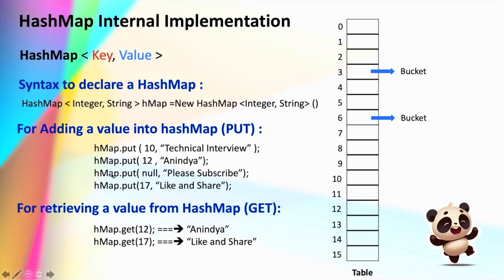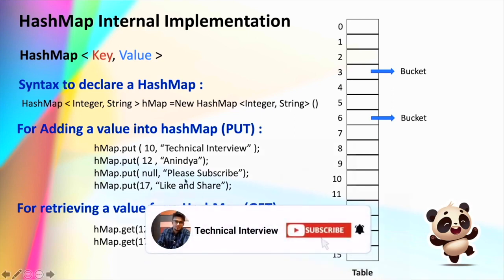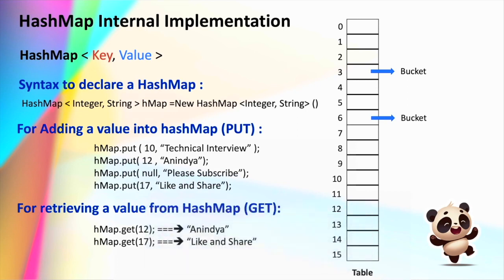One important fact about HashMap is that it allows inserting a single null value as a key, whereas a TreeMap — another important data structure — does not allow a null value as its key. This is how we insert a key-value pair within our HashMap, and the way we retrieve a value is by using the get function, where we pass the key for which we want to retrieve the value.